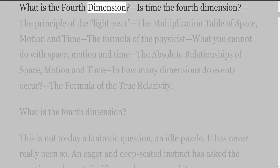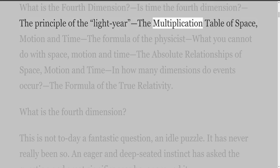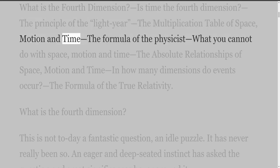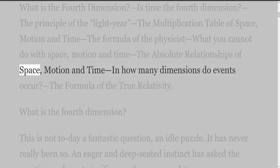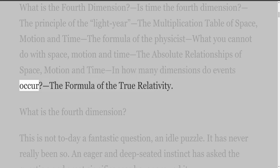What is the fourth dimension? Is time the fourth dimension? The principle of the light year, the multiplication table of space, motion and time, the formula of the physicist, what you cannot do with space, the absolute relationships of space, motion and time, in how many dimensions do events occur, the formula of the true relativity.